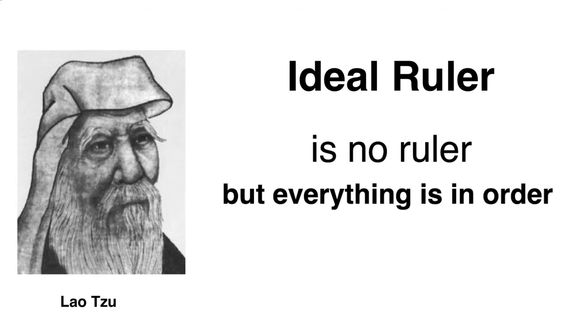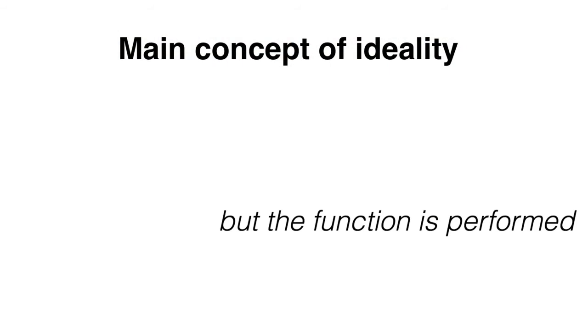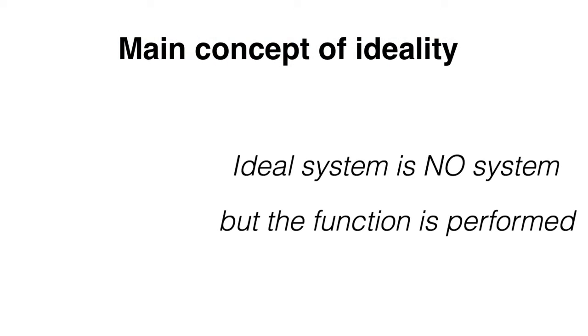Let's think about what it means to be an ideal policeman — that is a kind of part of the ruler. An ideal policeman has to be polite, speak many languages, and so on. But why do we need a policeman? We need police to keep things in order. So when everything is in order, we don't need policemen. That somehow gives proof for the concept that the ideal system is no system, but the function is performed.